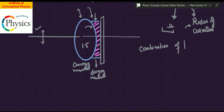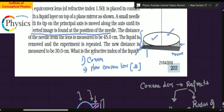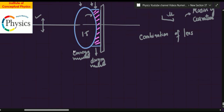This video is not meant to make you parrots — it's to make you think logically for the next question. The lens is equi-convex, so the radius of curvature on both sides is equal. The distance of the needle from the lens is measured to be 45 centimeters. The radius of curvature is what we need to find.